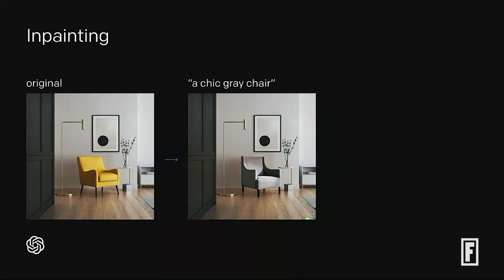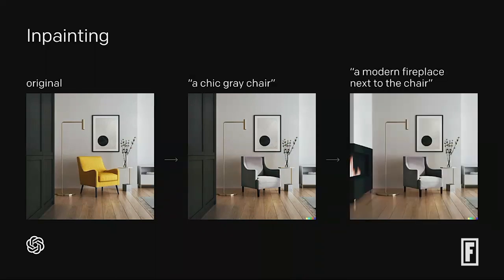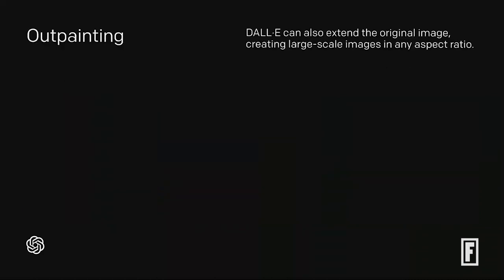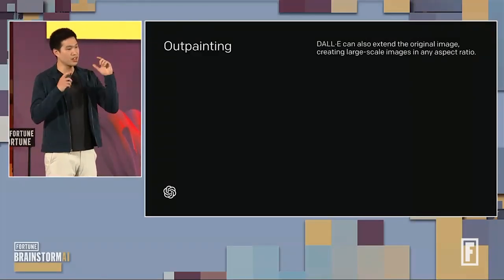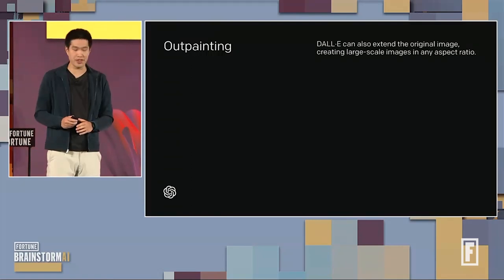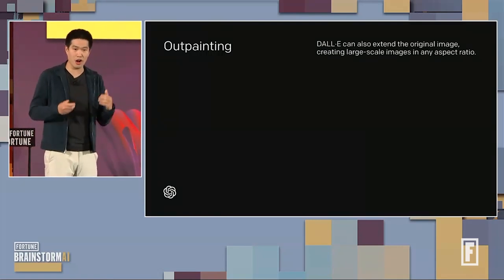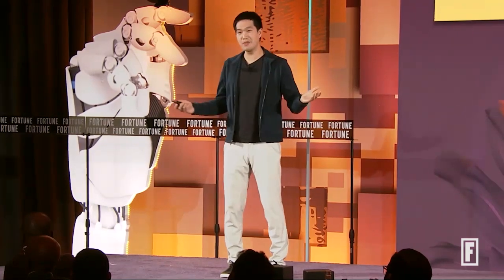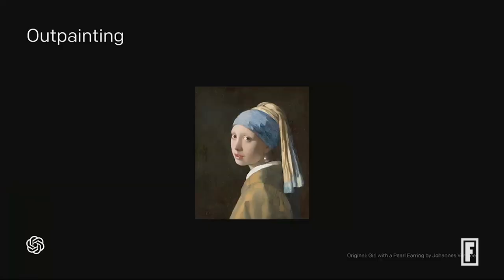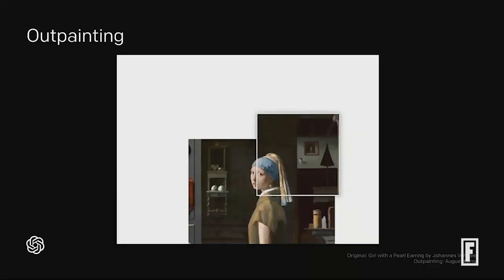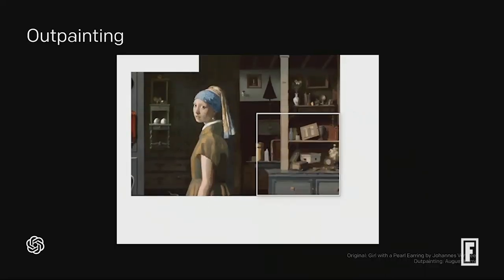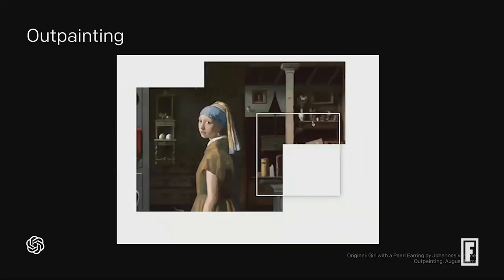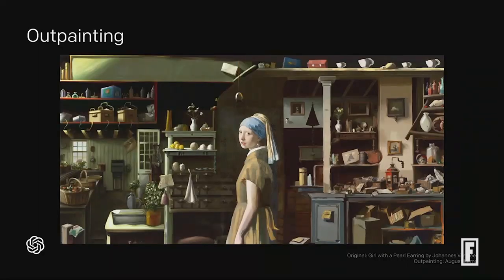One interesting thing is that you can chain these edits in succession — I can then ask for a modern fireplace on the wall, allowing a very iterative editing procedure. We also have outpainting, powered by the same technology as inpainting. We can take an original image and draw around its borders to synthesize a larger, arbitrary aspect ratio image. For example, artist August Kamp used our tool on the painting 'Girl with the Pearl Earring' and drew around it to visualize what could have been in the background — revealing that plausibly, this girl was in a very messy kitchen and living room.